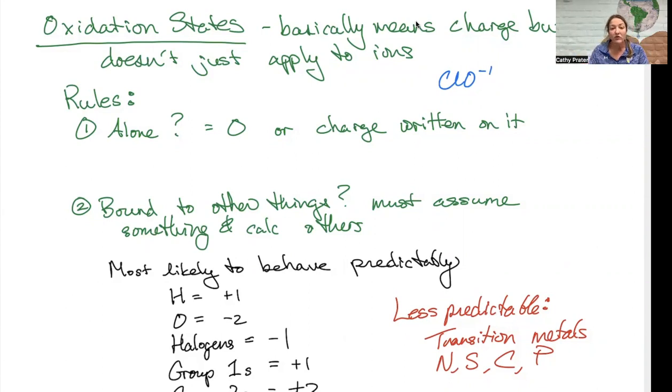They can't both behave according to my expectations based on the periodic table because if chlorine was a negative one and oxygen was a negative two, that would add up to negative three, and we know they add to negative one.